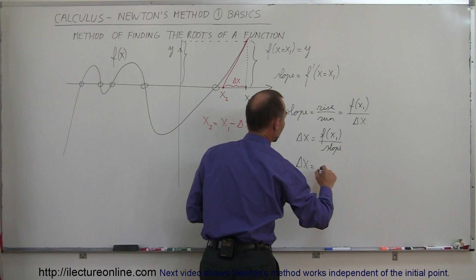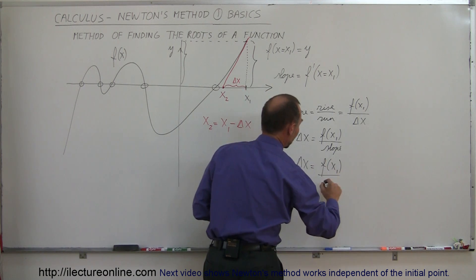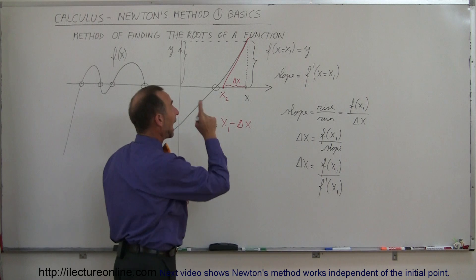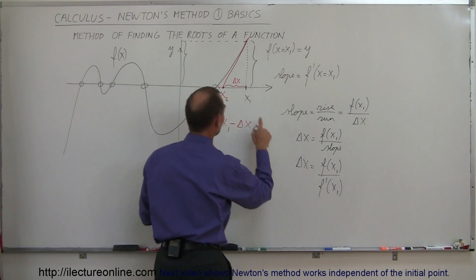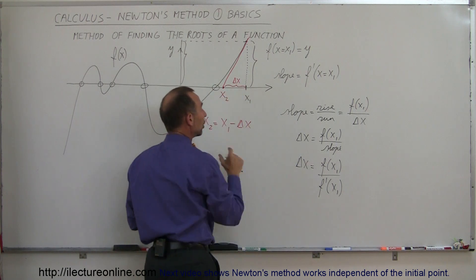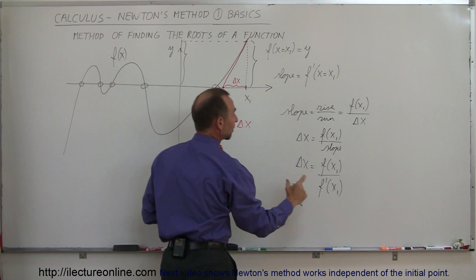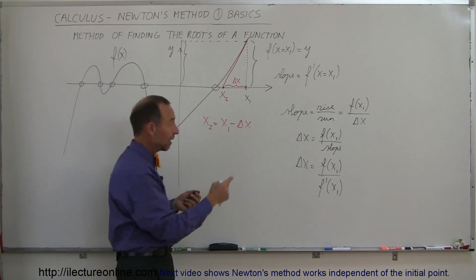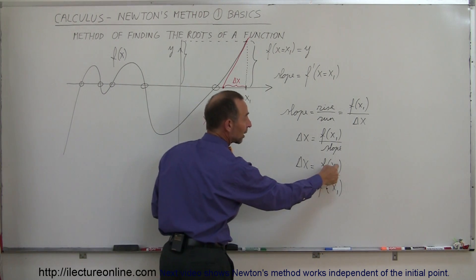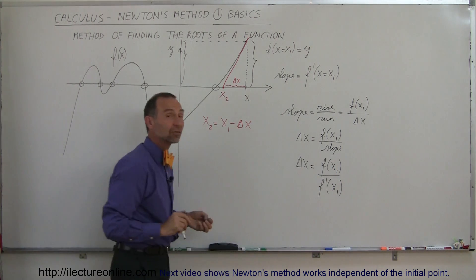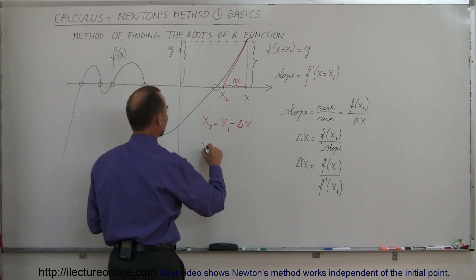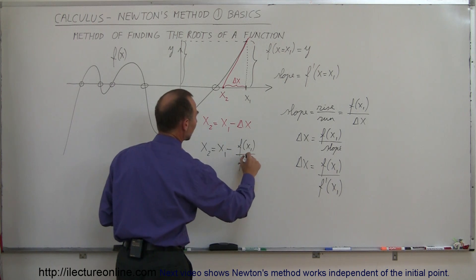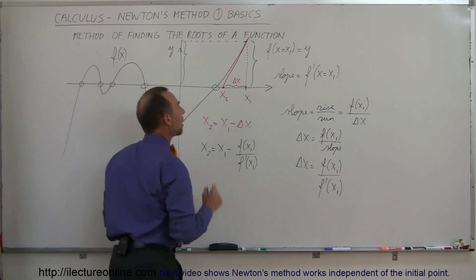So delta x is equal to the function evaluated at x₁ divided by the derivative of the function evaluated at x₁, because that gives the slope at that location. That means x₂ is equal to x₁ minus f(x₁) divided by f'(x₁). That ratio gives us the distance from x₁ to x₂, and now we have our new, closer point.